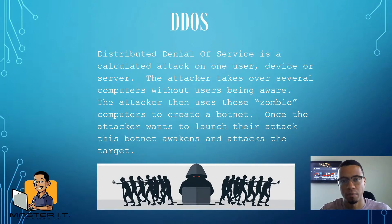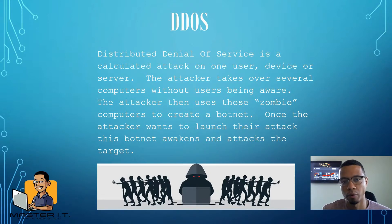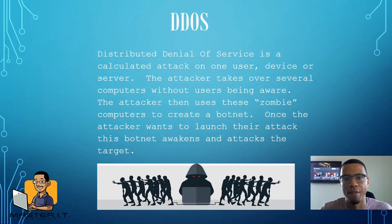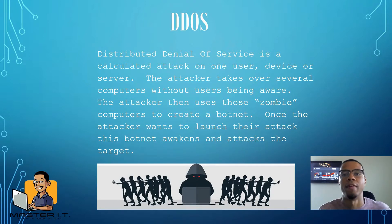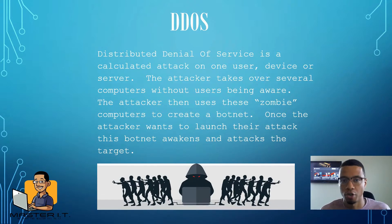Denial of service, simply put, is denying a service to users. This can happen simply by the server being overloaded with requests. So let's say a new video game comes out, and the server — the PlayStation Network, the Xbox Network — can only handle 500,000 requests at a time. And this new game comes out and it's getting a million requests at a time. The server just isn't capable of handling that, so it just shuts down and denies that service to certain users. So 500,000 is on, you're okay. Everybody else, they're going to get denied.